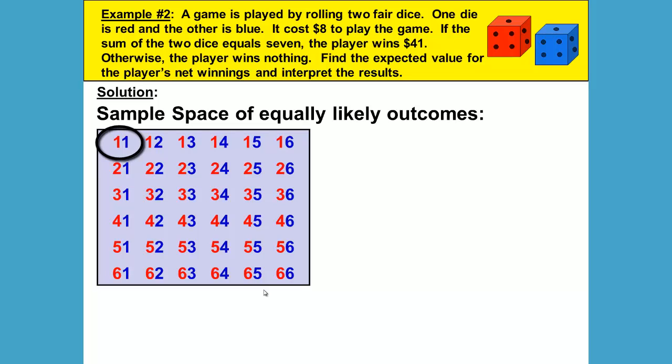We could get a one on the red die and a one on the blue die, and the sum would be two. We could get a six on the red die, a three on the blue die, and our sum would be nine. So you could pause here and take a look at this to get a better idea if you need to.